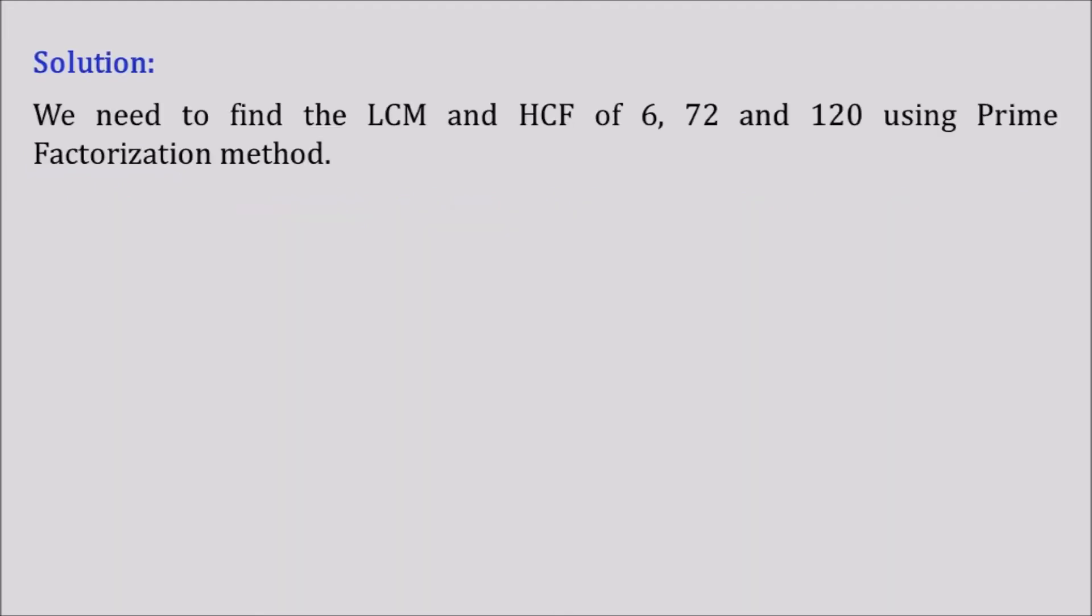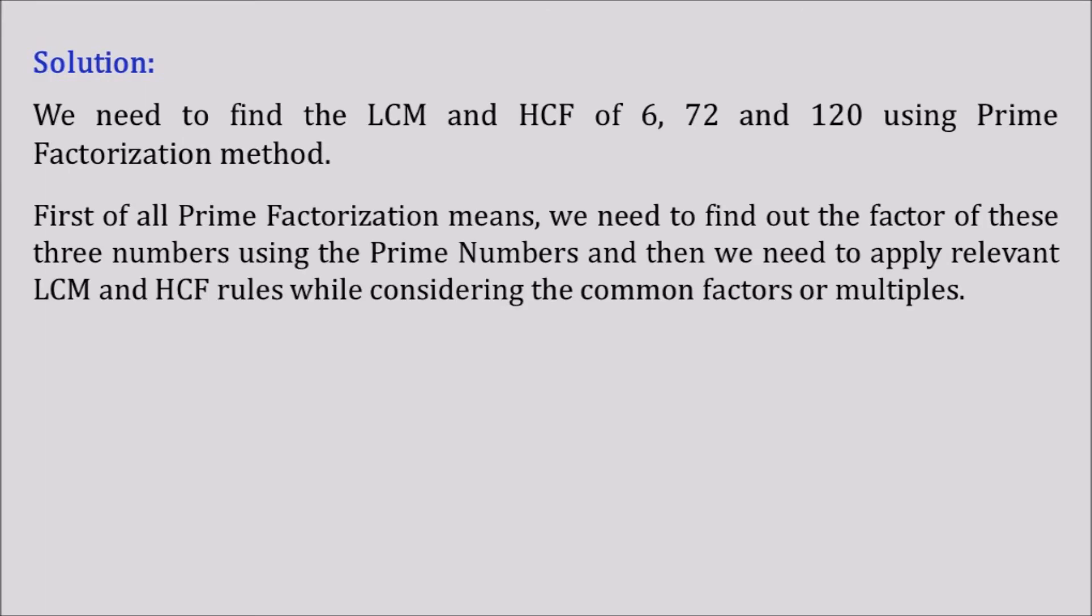We need to find the LCM and HCF of 6, 72 and 120 using prime factorization method. First of all, prime factorization means we need to find out the factors of these three numbers using the prime numbers. For that reason it is called prime factorization and then we need to apply relevant LCM and HCF rules while considering the common factors or multiples of these three numbers.